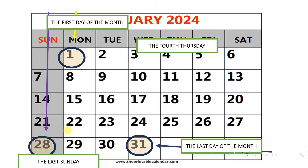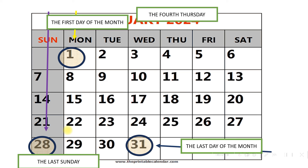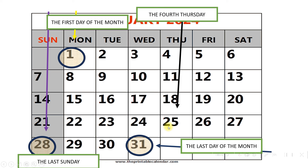Next question: what is the fourth Thursday? Go to Thursday and check the fourth one. First, second, third, fourth. So which is the fourth Thursday? The date is the 25th.